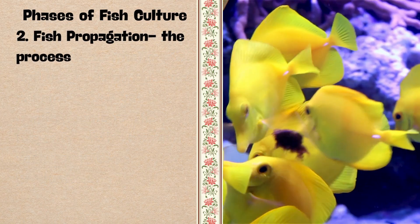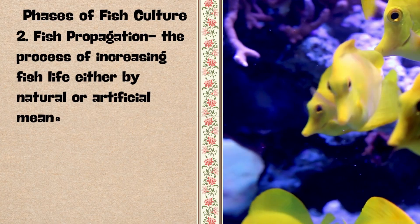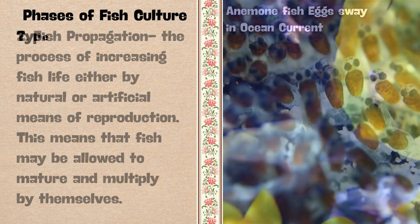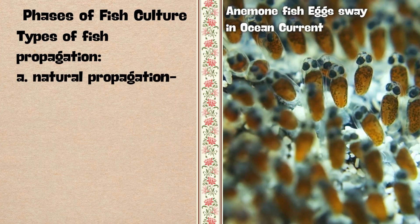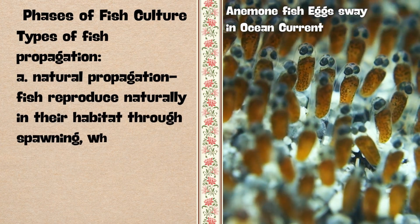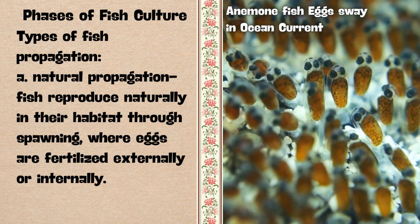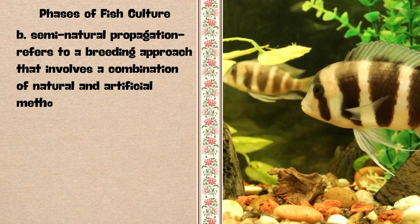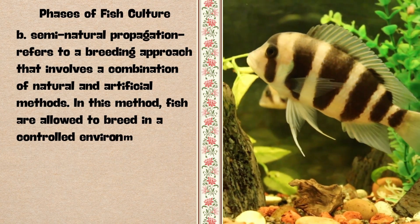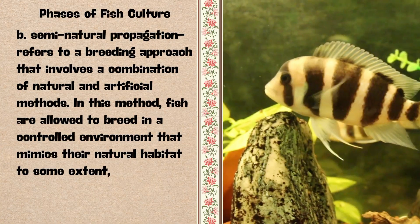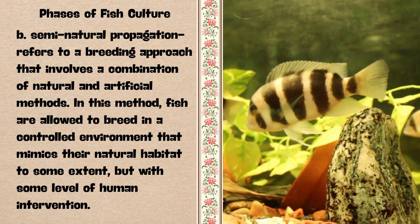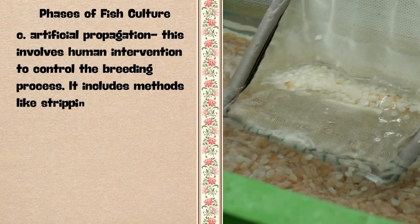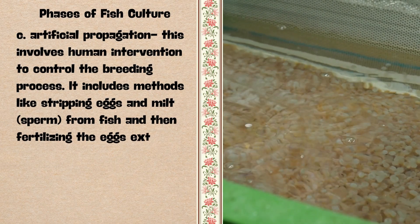2. Fish Propagation — it is the process of increasing fish life either by natural or artificial means of reproduction. Fish may be allowed to mature and multiply by themselves. Types: A. Natural propagation — fish reproduce naturally in their habitat through spawning, where eggs are fertilized externally or internally. B. Semi-natural propagation — a breeding approach combining natural and artificial methods; fish breed in a controlled environment mimicking their natural habitat with some human intervention. C. Artificial propagation — involves human intervention to control the breeding process, including stripping eggs and milt (sperm) from fish and fertilizing the eggs externally.